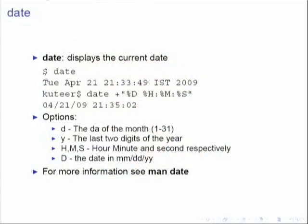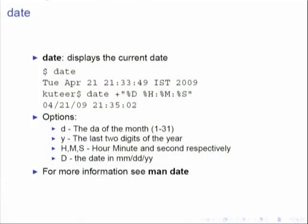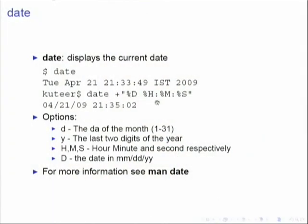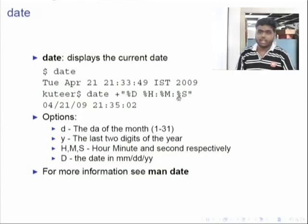The next command is date. Date displays the current date — that means today's date. When you type just date, you get today's date in a default format. There are options to modify how the date looks: small d for day of the month (1 to 31), y for the last two digits of the year, H, M, S for hours, minutes, and seconds respectively. For more information, you can see man followed by the command name.